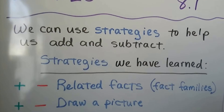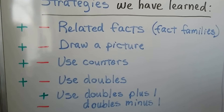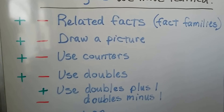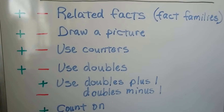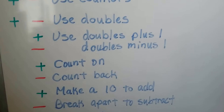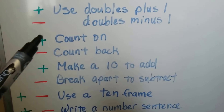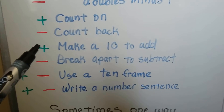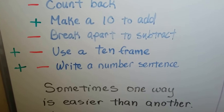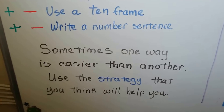We can use strategies to help us add and subtract. These are strategies we have learned so far. We have related facts, which are fact families, and we can use addition or subtraction. We can draw a picture, use counters, use doubles, doubles plus one for addition, doubles minus one for subtraction, count on or count back, make a 10 to add, break apart to subtract, use a 10 frame, or write a number sentence. Sometimes one way is easier than another — use the strategy that you think will help you the most.